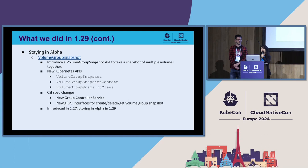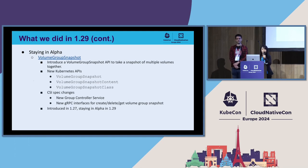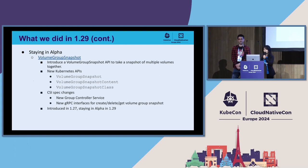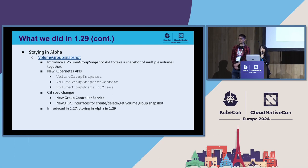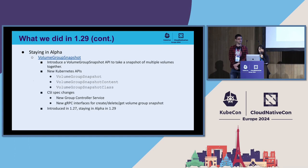In the 1.29 release, we also have volume group snapshot staying in alpha. This was introduced in 1.27 and we finished the implementation in 1.29. This allows you to create a snapshot of multiple volumes at the same point in time. We introduced new Kubernetes APIs: a volume group snapshot API representing the user's request for a group snapshot, volume group snapshot content representing a group snapshot on the storage system, and volume group snapshot class defining the type of group snapshot — usually defined by the admin. We also made CSI spec changes, introducing a new group controller service in CSI and new gRPC interfaces to create, delete, and get a group snapshot.